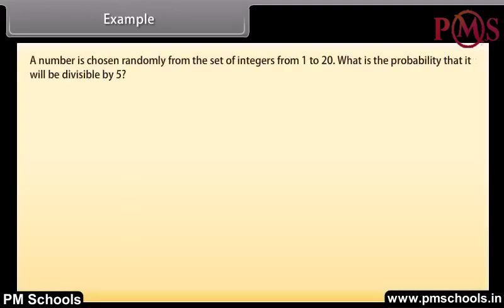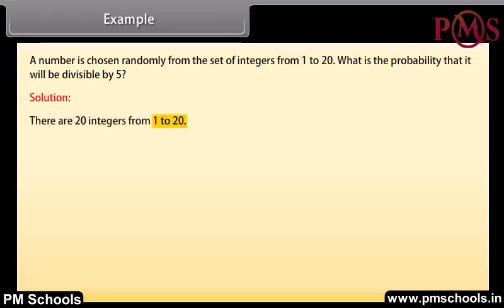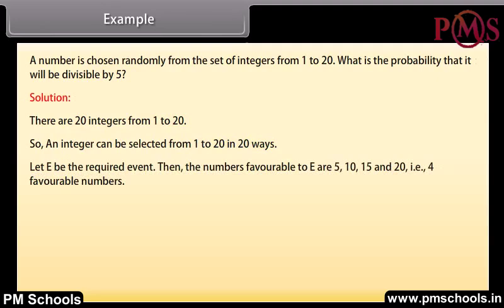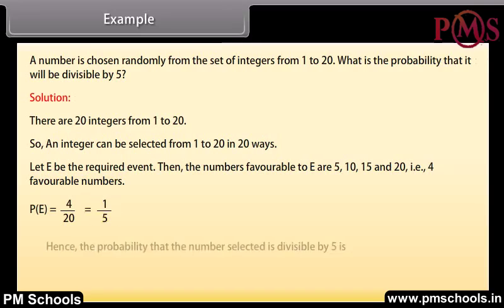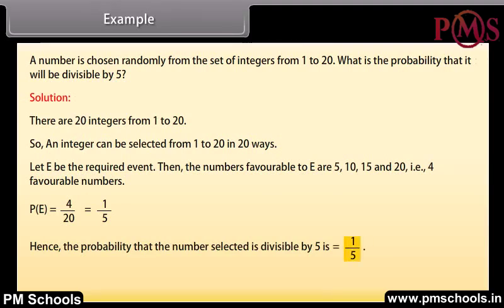A number is chosen randomly from the set of integers from 1 to 20. What is the probability that it will be divisible by 5? Solution: There are 20 integers from 1 to 20, so an integer can be selected in 20 ways. Let E be the required event. The numbers favorable to E are 5, 10, 15, and 20 — that is, 4 favorable numbers. Probability of E = 4/20 = 1/5. Hence, the probability that the number selected is divisible by 5 is 1/5.